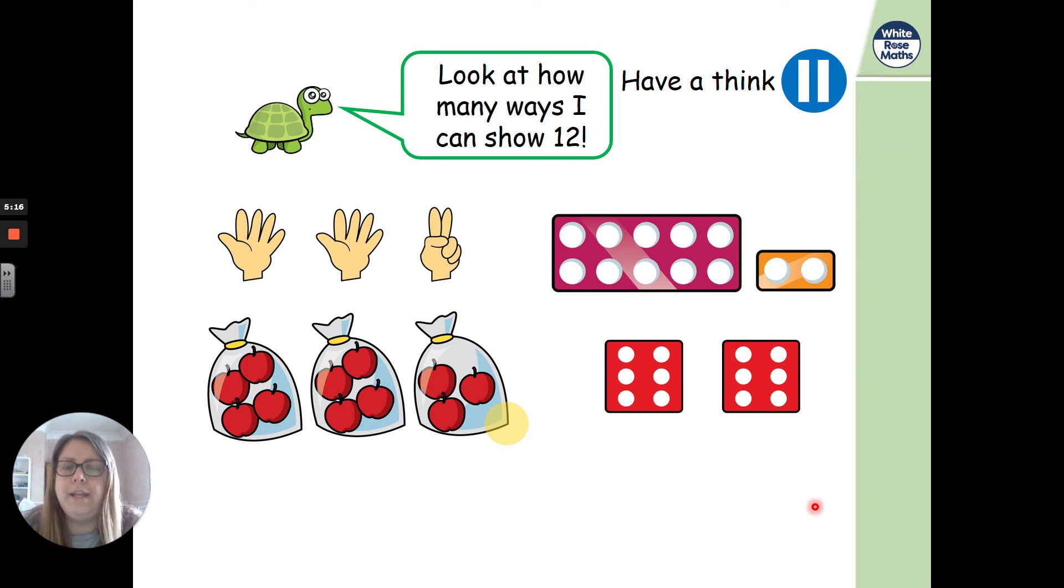So Tiny's saying here, look at all the ways I can show 12. So he's got his fingers, hasn't he? He's got 5 and 5, which is 10, and then 2 more, which is 12. He's got a numicon as 10 and 2 more to make 12. He's done some apples in some bags and he's done some dice. But which one is not correct? Hmm. I didn't notice when I was going through them. Did you? Pause the video and have a look. Which one is not 12?